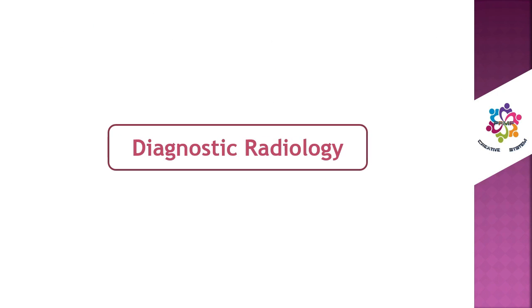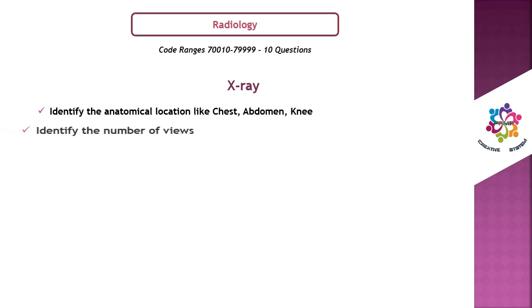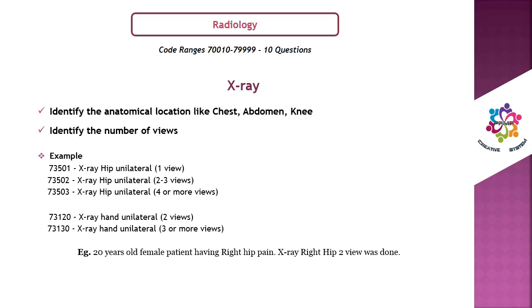Number 1: X-ray. Identify the anatomical location (chest, abdomen, knee) and the number of views. For example: 73501 = X-ray hip unilateral, 1 view; 73502 = X-ray hip unilateral, 2 to 3 views; 73503 = X-ray hip unilateral, 4 or more views; 73120 = X-ray hand unilateral, 2 views; 73130 = X-ray hand unilateral, 3 or more views. Scenario: a 20-year-old female with right hip pain, X-ray right hip 2 views — the answer is 73502.